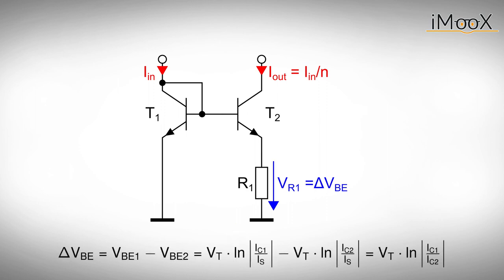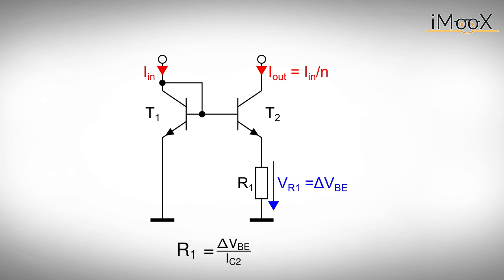By selecting a certain ratio IC1 over IC2 and one of the currents, we can determine the voltage delta VBE at the resistor. Note that due to R1 IC1 must be larger than IC2. The resistor itself is of course determined via Ohm's law.